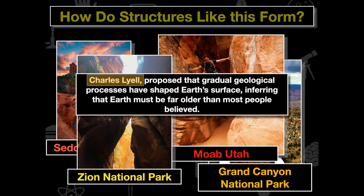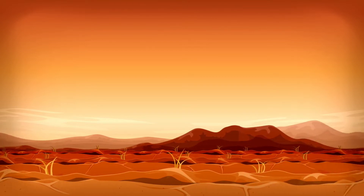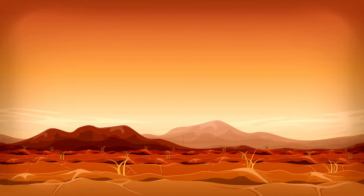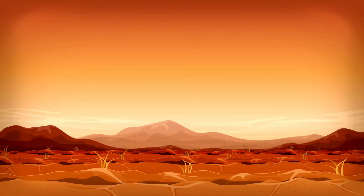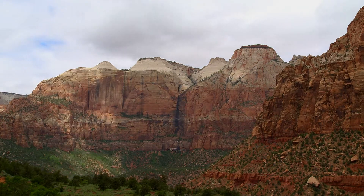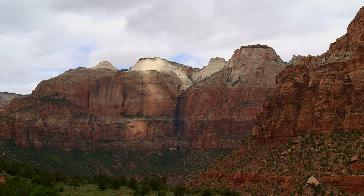Lyell is a scientist we're going to look at. He proposed that gradual geological processes have shaped the Earth's surface, inferring that the Earth must be far older than most people believed. Lyell really makes Darwin question how old the Earth is and influences his evolutionary thought process. We're going to go into the scientists and individuals who influenced Darwin in more detail.